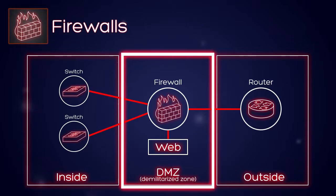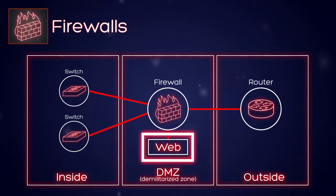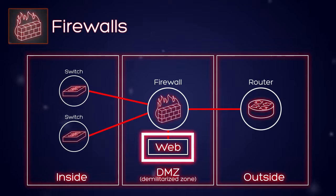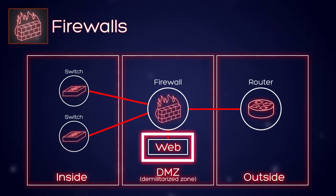Besides the firewall, anything that needs to talk to both the inside and outside portions of your network should sit inside the DMZ. For example, if you're hosting your own web server, that web server needs to talk to both the inside part of your network as it gets data, and then display that data to the general public through the outside portion. The DMZ is just a logical part of network design — physically, your web server can be next to your firewall or several hundred feet away. When we talk about zones, we're talking about logical zones, and the firewall actually sits inside the DMZ.